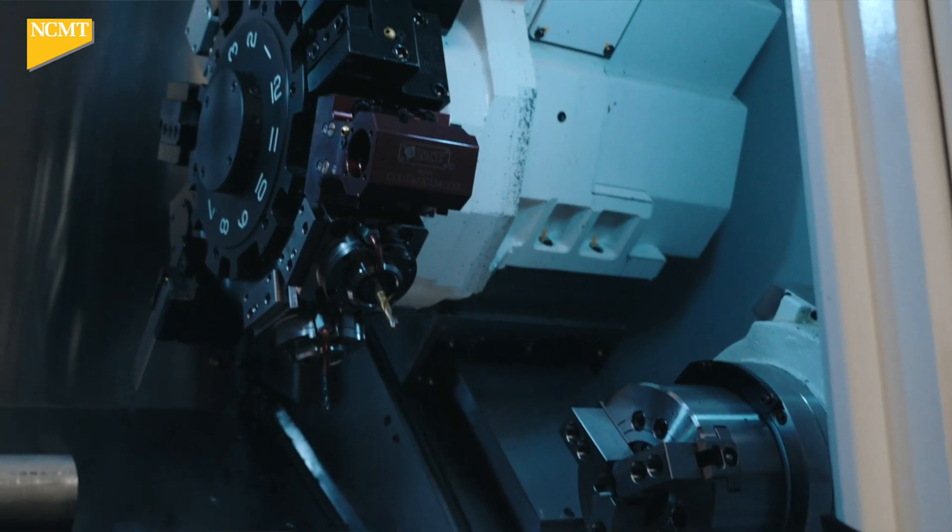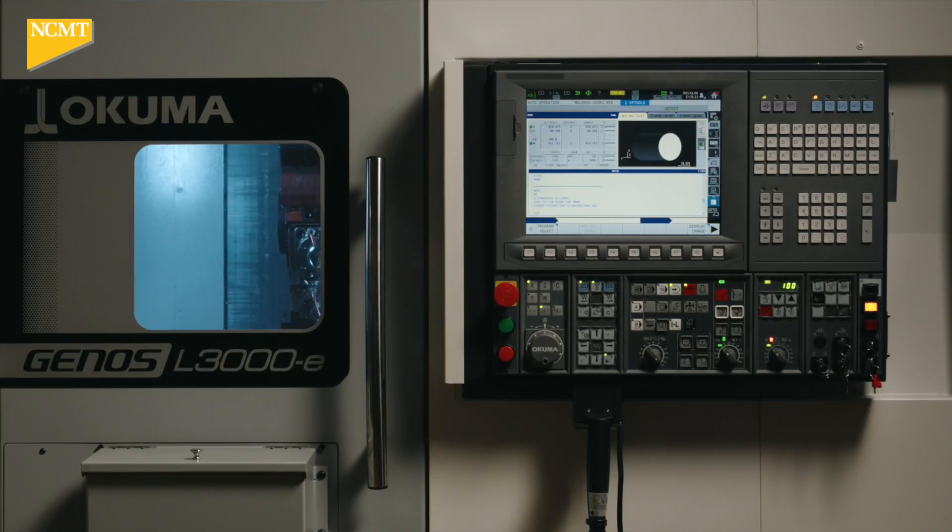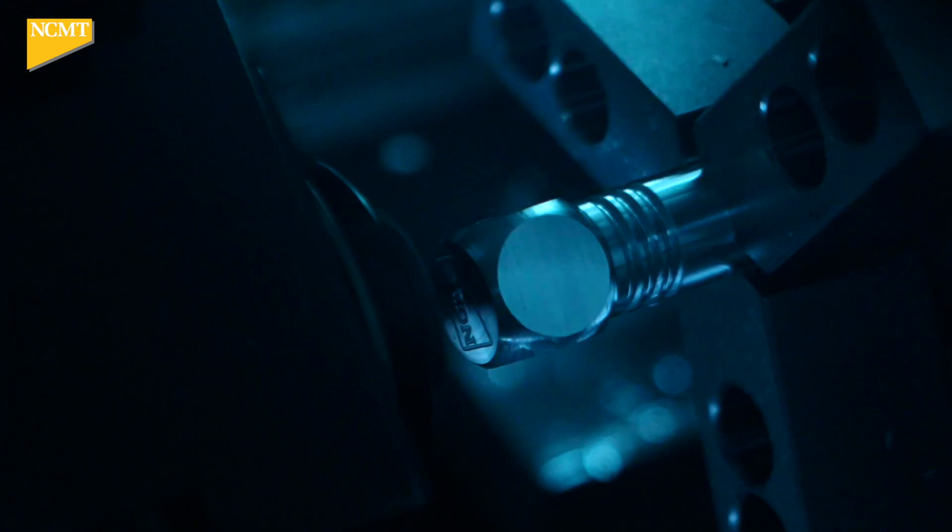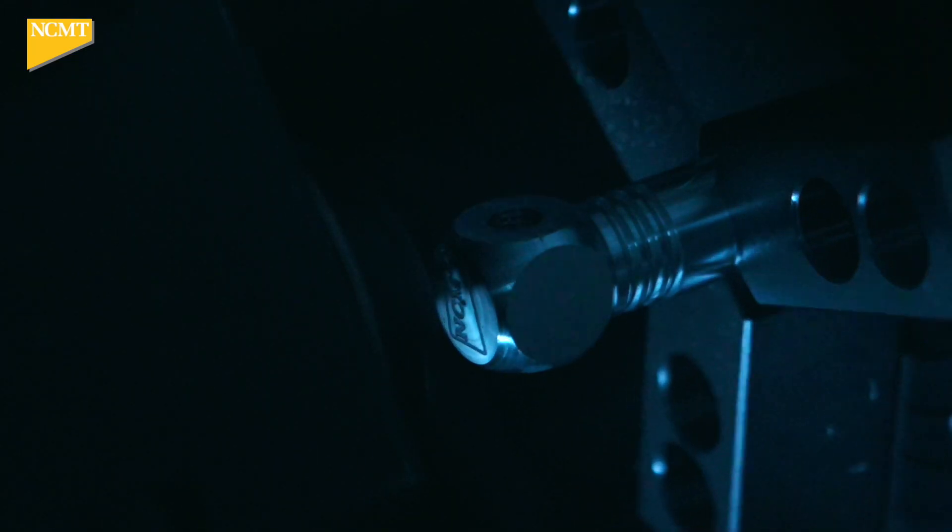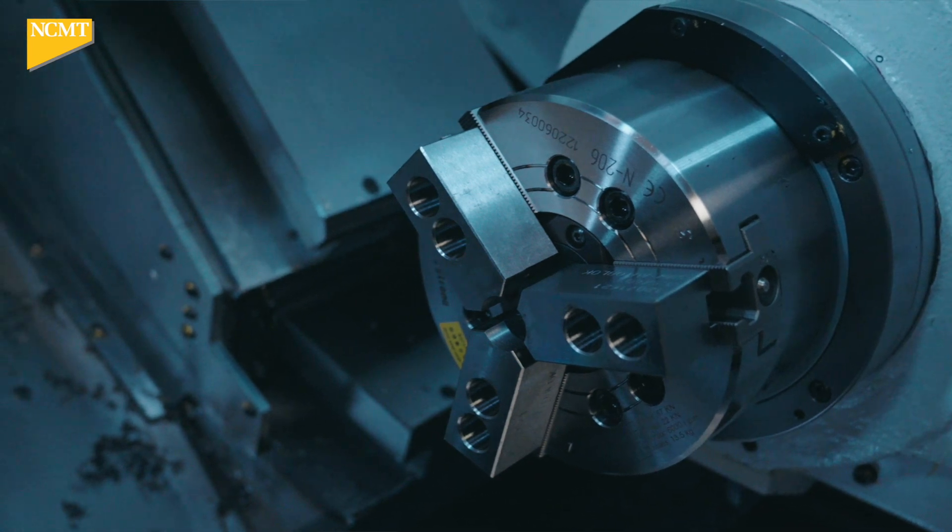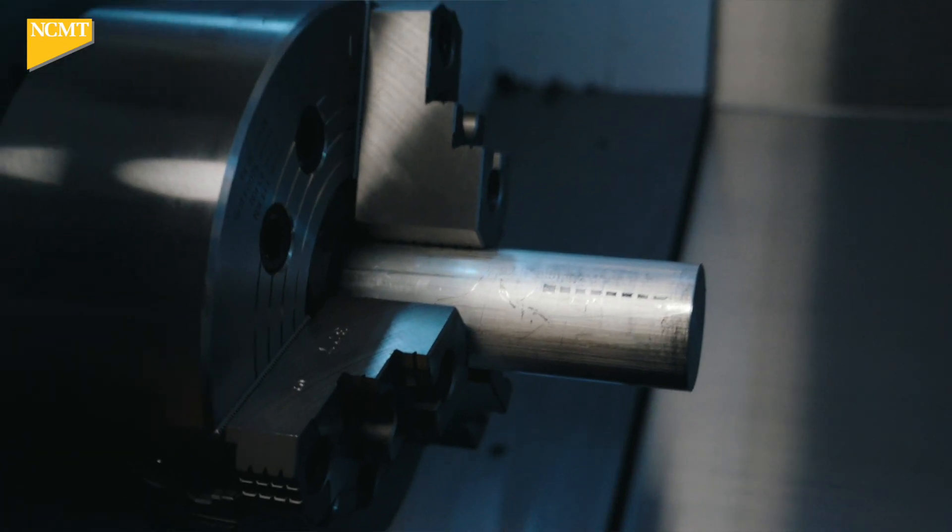We're showing the capabilities by using all functionalities such as the subspindle and Y axis. We're also engraving on the cone. That makes this machine very versatile, covering a wide range of different components. For instance, the throughbore on this machine is 70mm, allowing us to add a bar feeder.